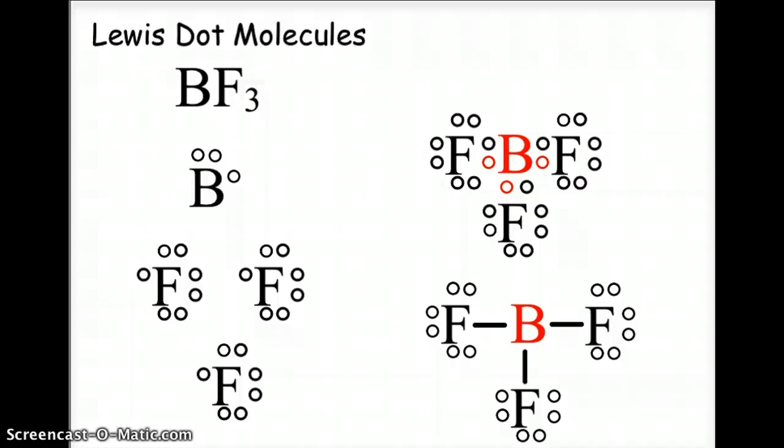we will end up with the boron bonding single bonds to each of the fluorines, and the three individual electrons on the boron will take up space on each of those fluorines, giving each of the fluorines the rule of octet, but the boron will only have six electrons.